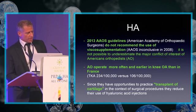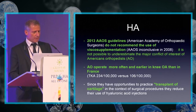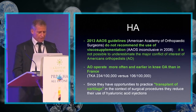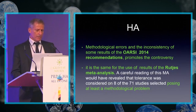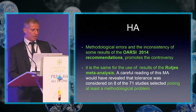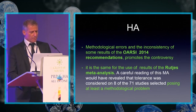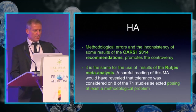Since American orthopedics have opportunities to practice cartilage transplant in surgical procedures, they reduce their use of hyaluronic acid injection. Methodological errors and inconsistency in the OARSI 2014 recommendations promote the controversy. Likewise, a careful reading of the Rutjes meta-analysis would have revealed that tolerance was considered in only 8 of the 71 studies selected, posing at least a methodological problem.